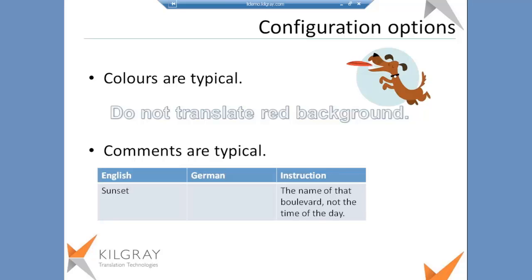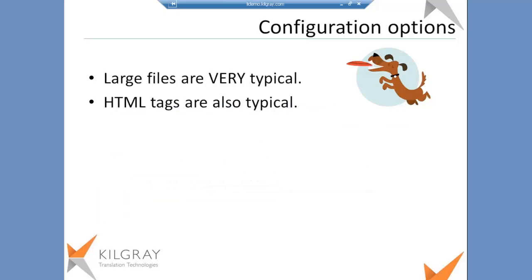Colors are also typical. For example, sometimes your customer says do not worry about cells with a red background color — those don't need to be translated. Comments are also typical. There's the English, there's the German, and there is an instruction comment that here 'Sunset' refers to the name of a boulevard, not the time of day — so probably in German 'Sunset' would remain 'Sunset'. Large files are also very typical; the biggest file processed so far with this filter was a 70-megabyte CSV, and that was just bilingual. HTML tags in Excel files are also very typical.